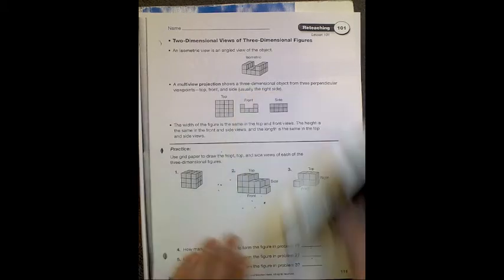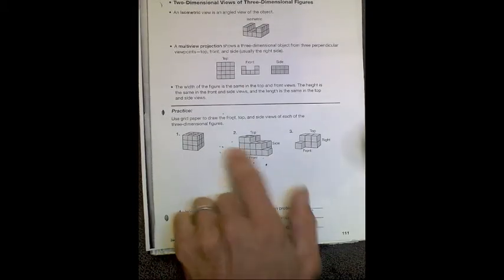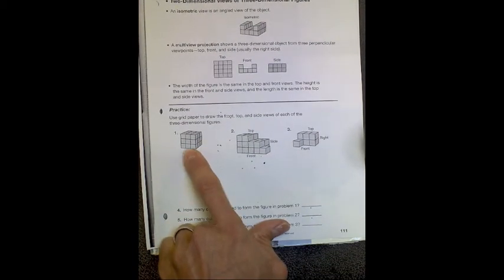You need to do that for the problems below. Now this one, it's a perfect cube. Nine by nine, all sides have nine, so no matter how you turn it, you should see three rows of three or nine cubes.